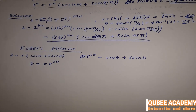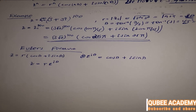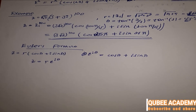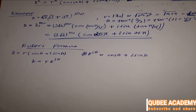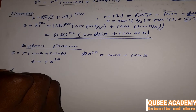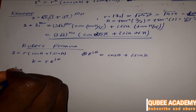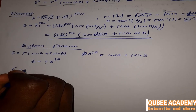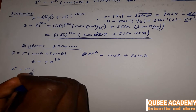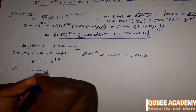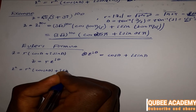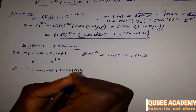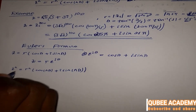Euler's formula states that e to the power of i theta is equal to cosine of theta plus i times sine of theta. This extends to e to the power of i n theta equal to cosine of n theta plus i times sine of n theta.